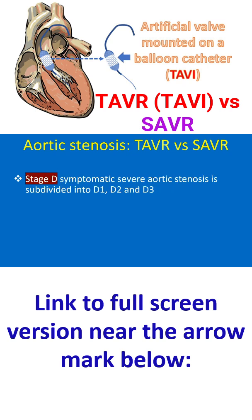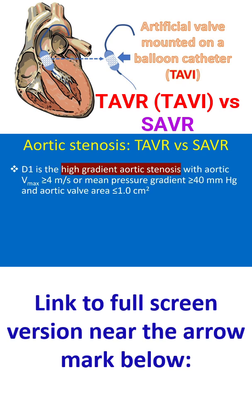Stage D, symptomatic severe aortic stenosis, is subdivided into D1, D2, and D3. D1 is high gradient aortic stenosis with aortic Vmax more than or equal to 4 meters per second, or mean pressure gradient more than or equal to 40 mmHg, and aortic valve area less than or equal to 1 square centimeter.